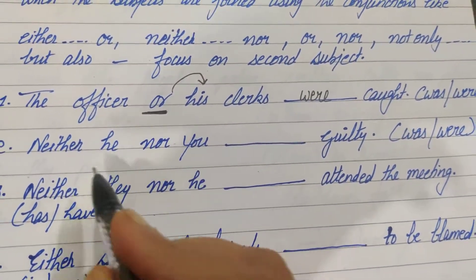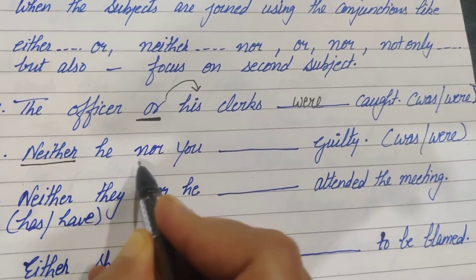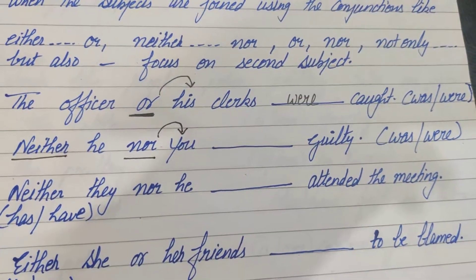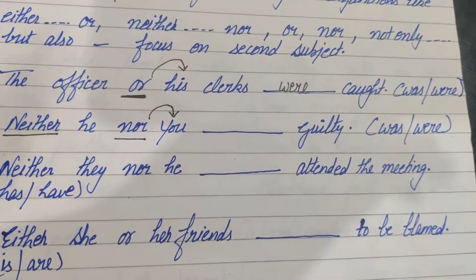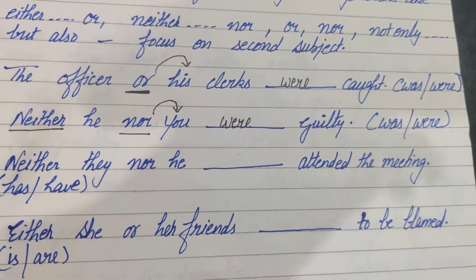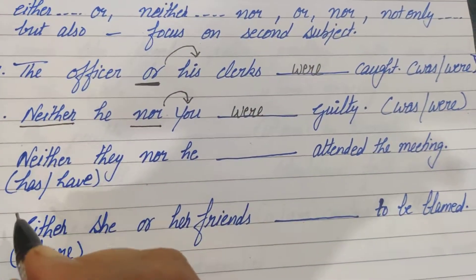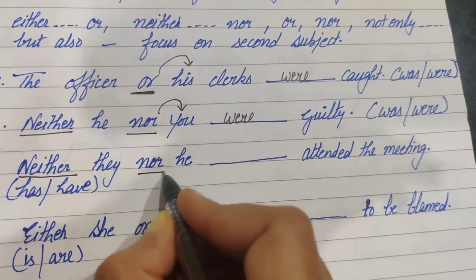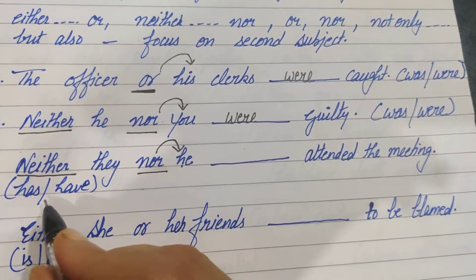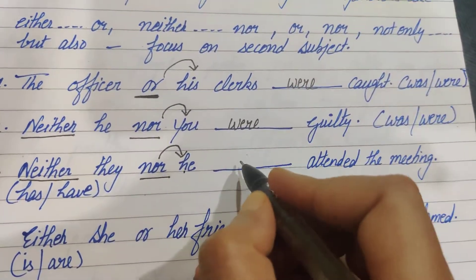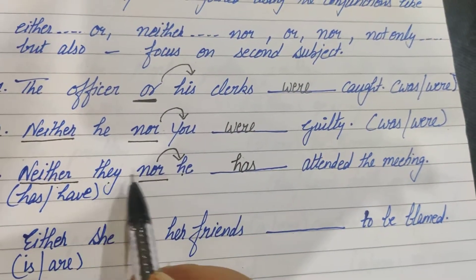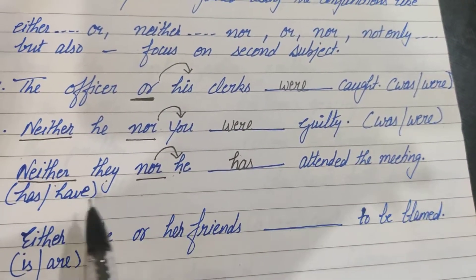'Neither he nor you.' The joining words are 'neither' and 'nor', so we focus on the second subject, which is 'you'. With 'you' we use 'were'. Next: 'Neither they nor he.' Again we focus on the second subject — 'he' — which is singular. So: Neither they nor he has attended the meeting.